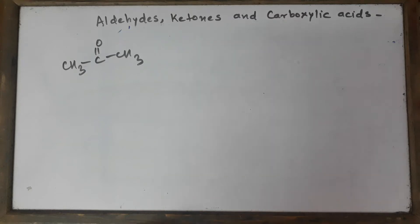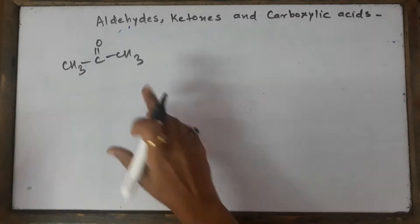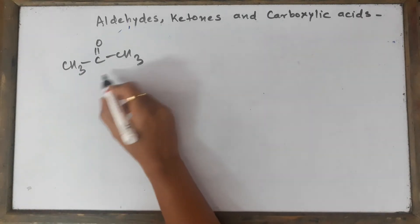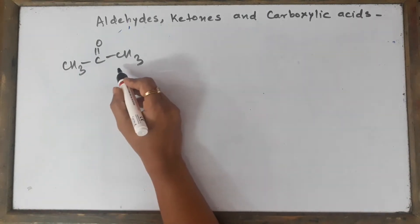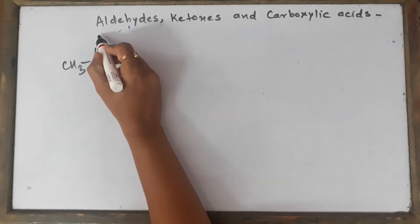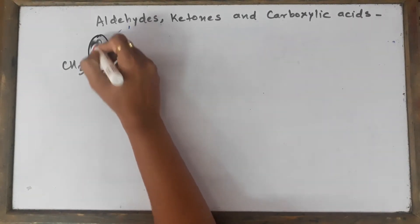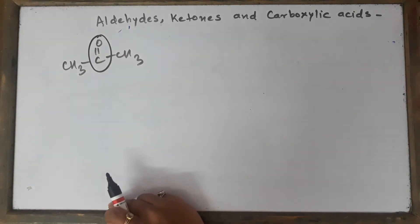Greetings everyone, today we are going to start with the nomenclature of ketones, our next topic. Let's begin with a simple example over here. I have drawn a simple ketone and as we all are aware, the ketones have this kind of functional group that is C double bond O.